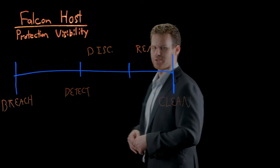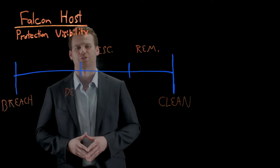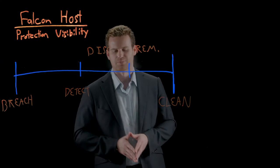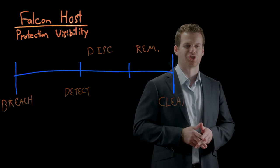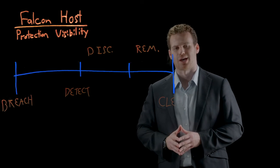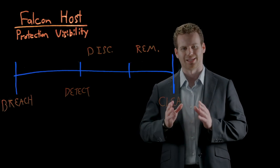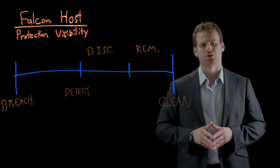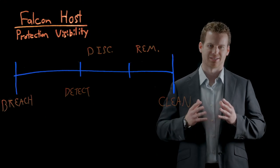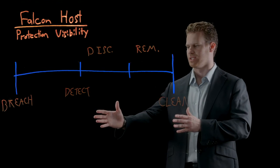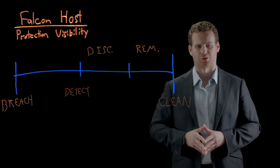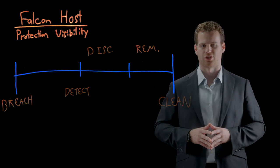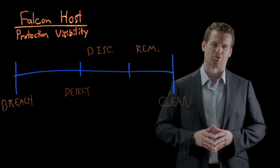I've just shown you a few examples of some very sophisticated malware-free intrusion techniques that we're seeing in the wild today. If we go back to our response timeline, most organizations are unable to detect or stop these breaches because they're relying on legacy technology that focuses just on the malware. Only through the use of Falcon Host's indicator of attack technique can you successfully detect as well as prevent these attacks from occurring in the first place. To learn more about IOA-based detection and prevention, please come check us out at CrowdStrike.com.